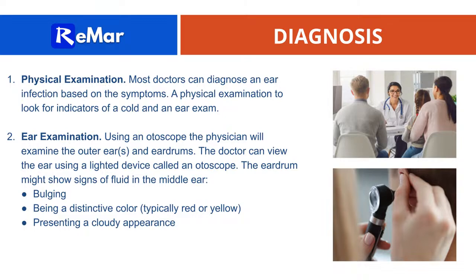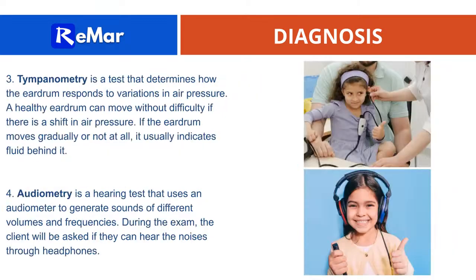The eardrum may appear cloudy, a distinctive red or yellow color, indicating fluid. Pneumatic otoscopy is a test that determines how the eardrum responds to variations in air pressure. A healthy eardrum moves without difficulty with a shift in air pressure; if it moves gradually or not at all, it usually indicates fluid behind it. Audiometry is a hearing test using an audiometer to generate sounds of different volumes and frequencies.